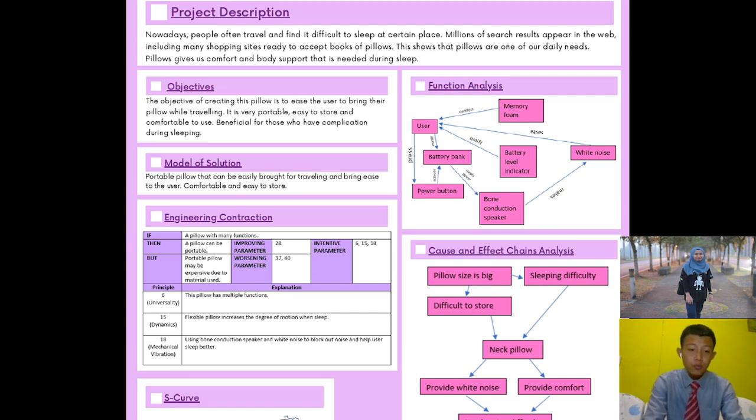For the improving parameter, we are using Mechanics Substitution. For the worsening parameter, we are using Thermal Expansion Composite Materials. For the Composite Materials, we are changing the uniform to Composite Structures.